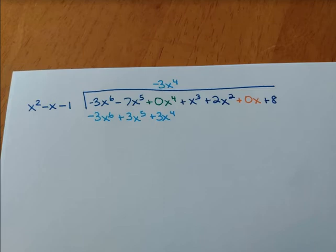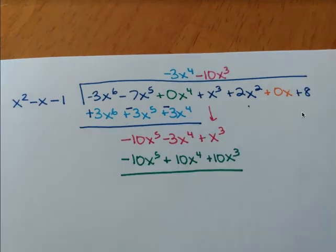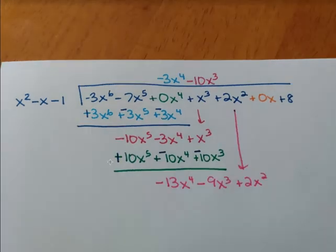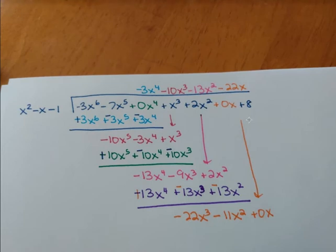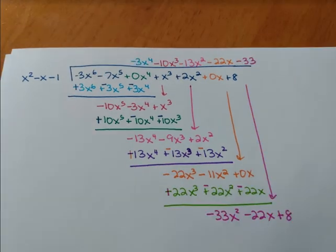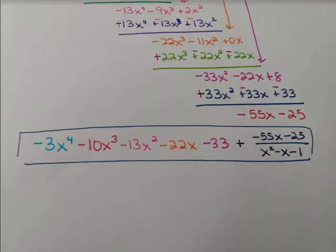So I start by figuring out what multiplies to x² to make -3x⁶, multiply it through, change all the signs, add down, drop down my next term. What multiplies to x² to get -10x⁵? There it is. Multiply through, change all the signs, add down, drop down the next term. What multiplies to x² to make -13x⁴? There it is. Distribute it through, little mistake there. Change all the signs, add down, drop down the next term. What has to multiply to get there? That's -22x. Distribute it through, change all the signs, add down, drop down the 8. What has to multiply to make that? That's -33. Distribute that through, change all the signs, add down, and there's our final answer.